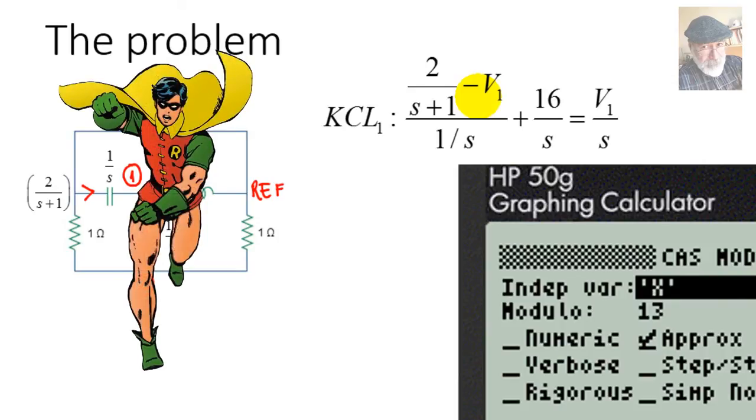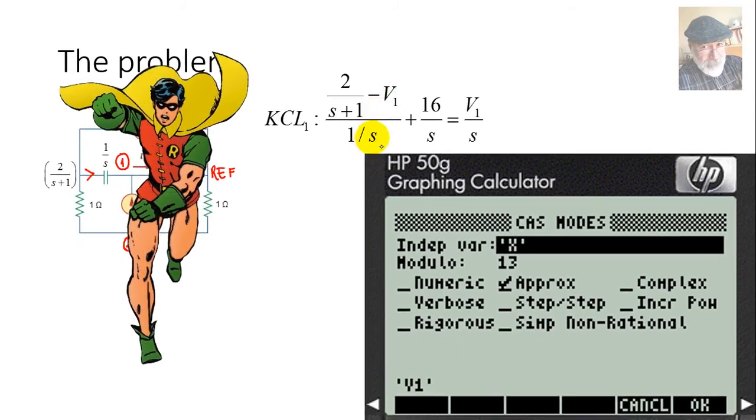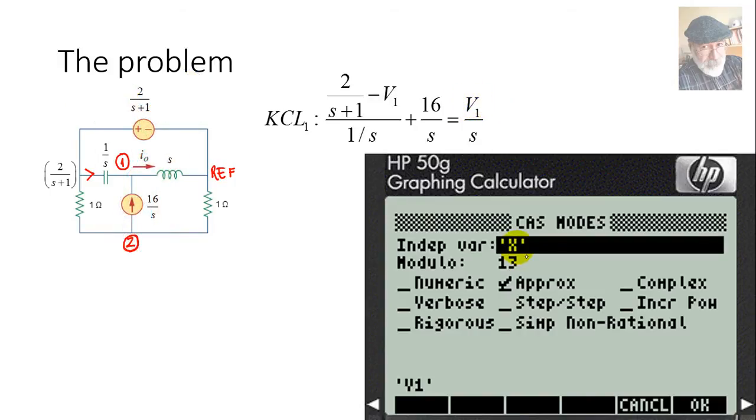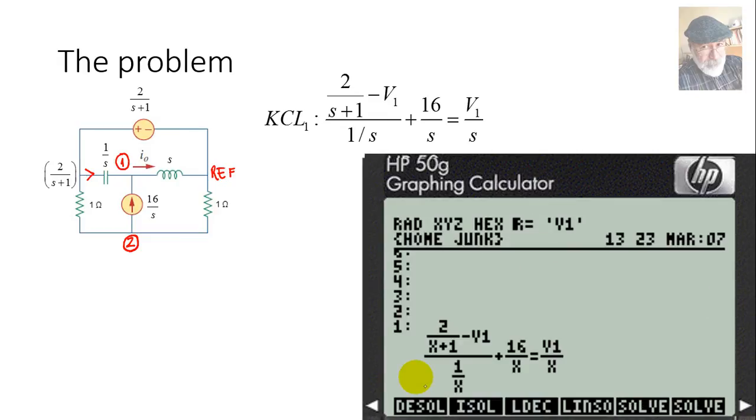Before doing anything, I will be solving not for s, I will be solving for V1. So let's make sure that the independent variable up here is V1. How am I there? Mode CAS, independent variable, edit, make that V1, and enter. You see, it's V1, the independent variable.